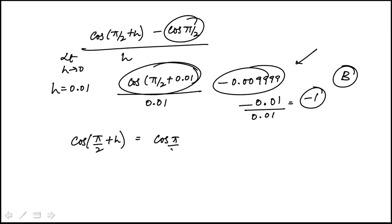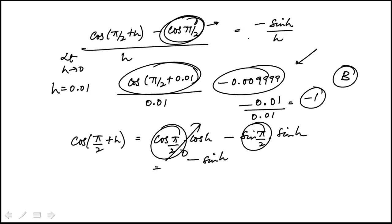So this would be cosine π/2 cosine h minus sine π/2 sine h. Again, this is 0. Cosine π/2 is 0. Sine π/2 is 1. So that's minus sine h. This piece is 0. So this limit becomes minus sine h over h, and this is h going to 0.